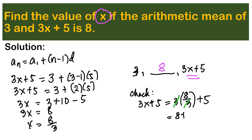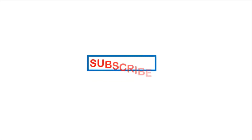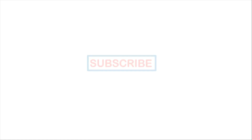To check: substituting x equals 8/3 into 3x plus 5 gives 3 times (8/3) plus 5, which equals 8 plus 5, which equals 13. Since the last term is 13, our answer is correct.